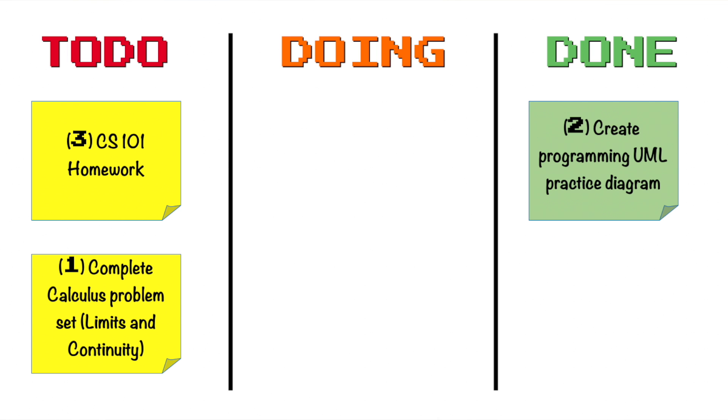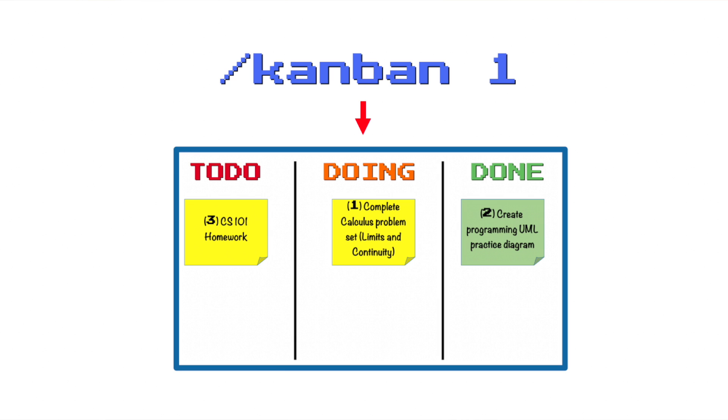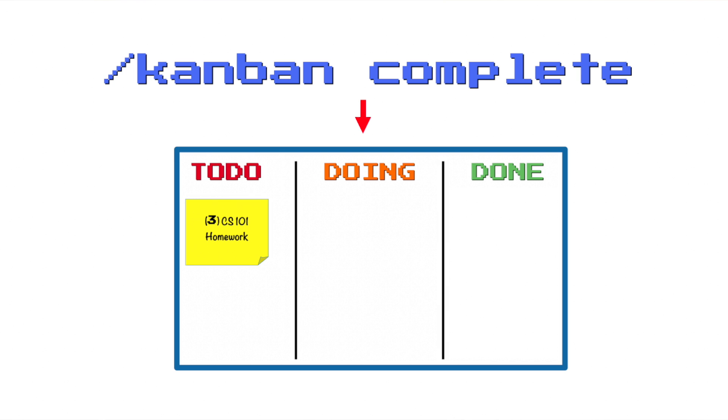I also designed it so when a task is created, it gets assigned a unique identification number, which we can use for different operations. For instance, slash Kanban followed by the identification number would move that specific item across the board — so if the task was in the to-do column, it would move to the doing column, and vice versa. Finally, slash Kanban complete would remove every single item in the done column.